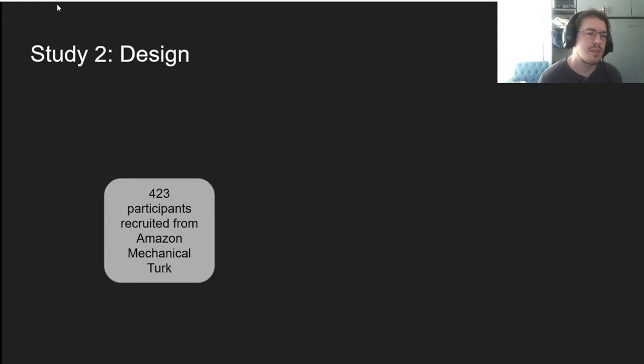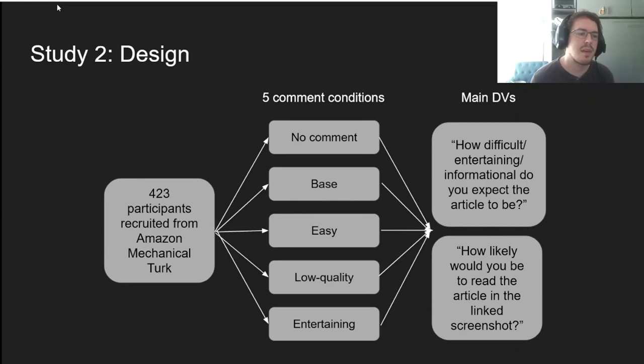For study two, we recruited about 400 people from MTurk, put them into one of our five conditions, again including a no comment control, and asked how difficult, entertaining, or informationally useful they expected the article to be, and how likely they would be to read it.